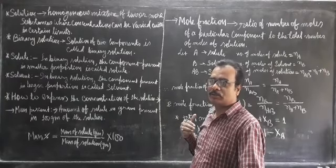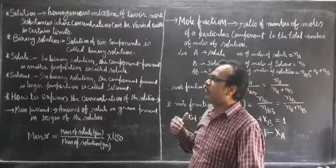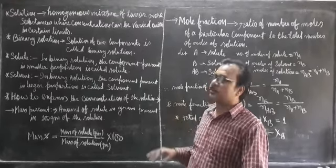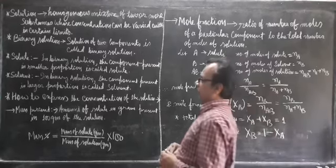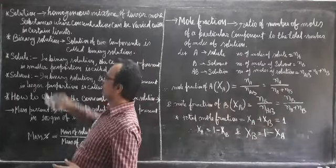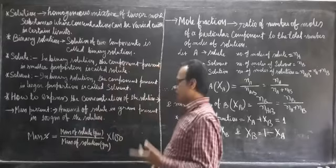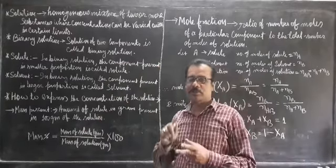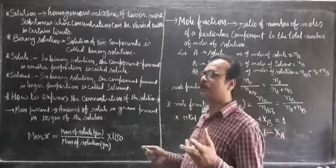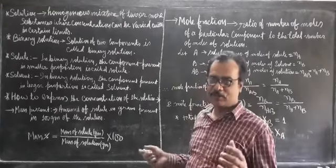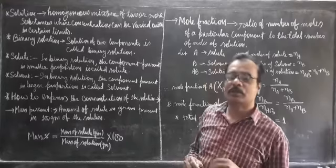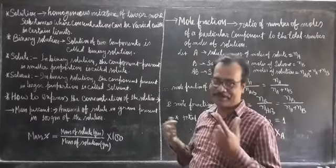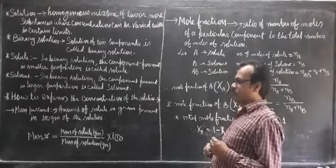Concentrations are not fixed in a homogeneous mixture — it depends upon the people and what kind of solution they want. That is why the concentration of solutions is variable. Now, binary solutions are those solutions which have only two components: one solute and one solvent, like sugar and water. When you mix sugar into water, it is a binary solution. When you mix salt into water, it is also a binary solution, because only two components are present.